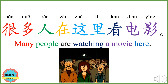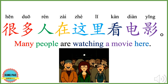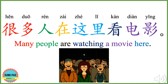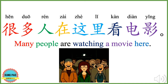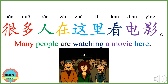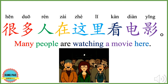很多人在这里看电影。 很多 means many or a lot of. 人 means people. 在 means in or at, and can also show the present continuous tense. 这里 means here. 看 means to watch. 电影 means movie or film. 很多人在这里看电影 means many people are watching a movie here. Now you can try.